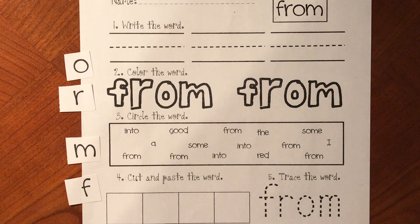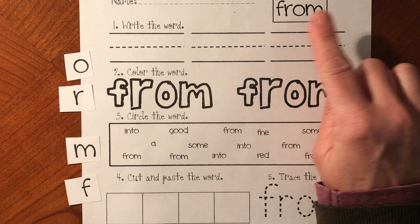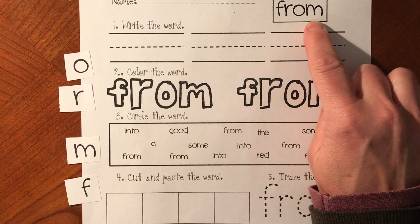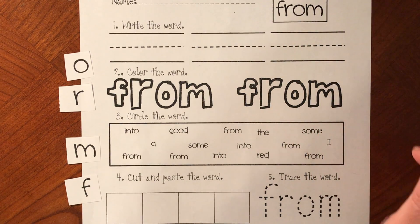Friends, we have a sight word. This is the sight word from. We're going to practice with the word from. We don't say 'ah' in the word from. That's why this is a sight word.